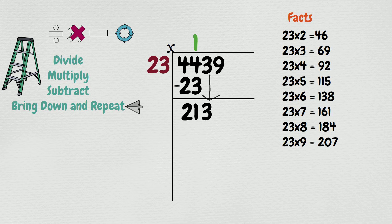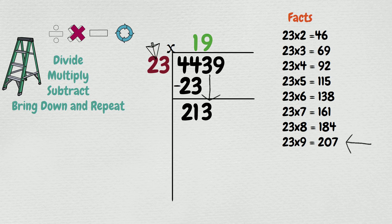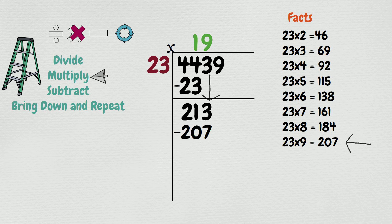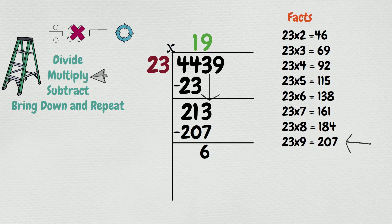Now we're going to repeat. How many times does 23 go into 213? Well, 23 times 2 equals 46, 23 times 3 is 69, and 23 times 6 is 138. Let's go higher to 23 times 9, which is 207. So 23 goes into 213 nine times — put the 9 on top. Multiply, which gives us 207. 213 minus 207 is 6. Bring down the last number, 9. So we have 19 on top so far.